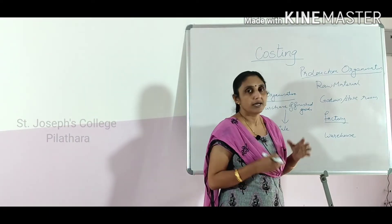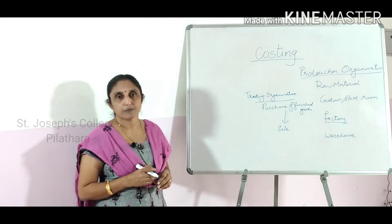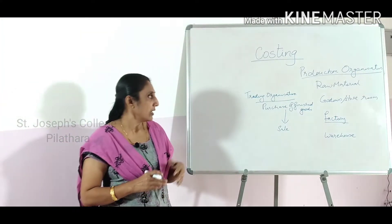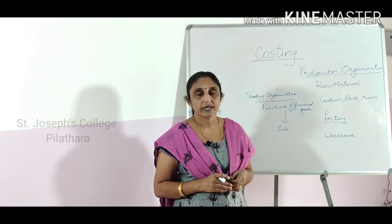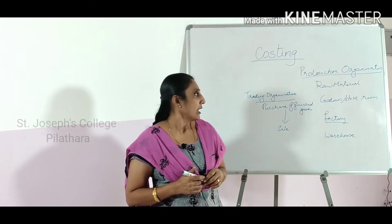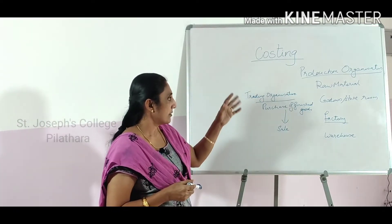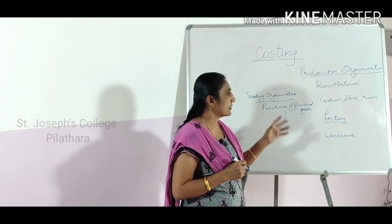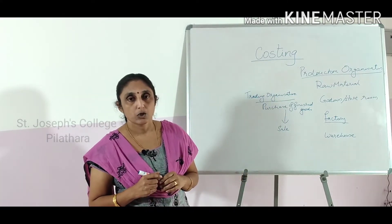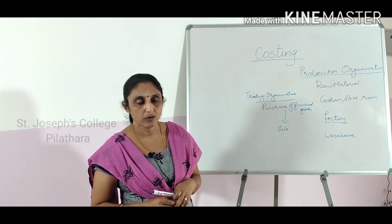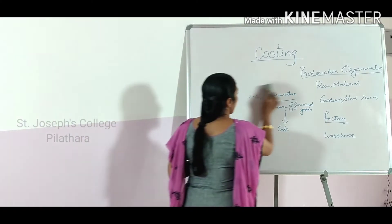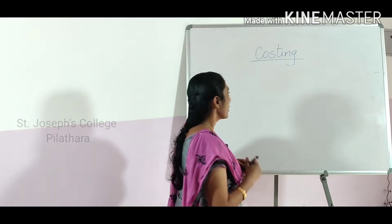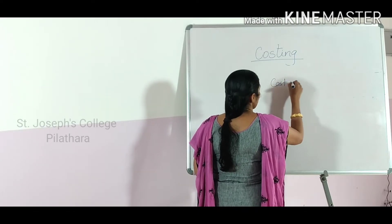Only when cost is controlled can we reduce the cost of production. Once the cost of production is reduced, we can maximize our profit, and that is the ultimate aim of any business organization. So for a production organization, cost accounting is inevitable — we can say it is indispensable. The main aim of introducing cost accounting in a production organization is to ascertain the cost of production or to find out the cost of a product.